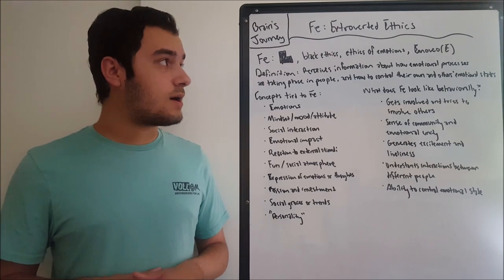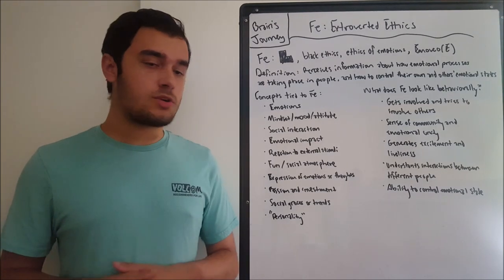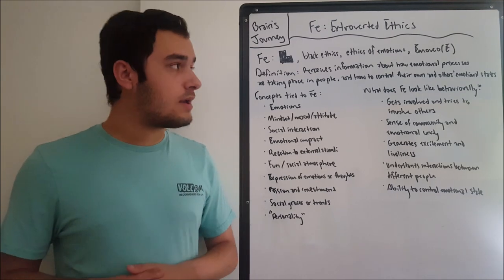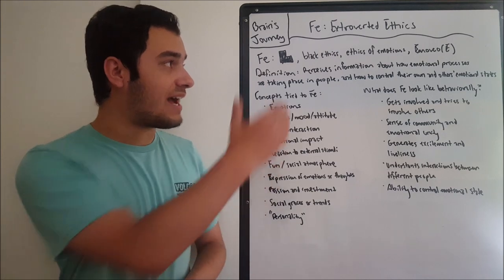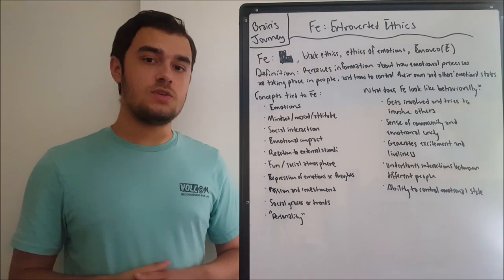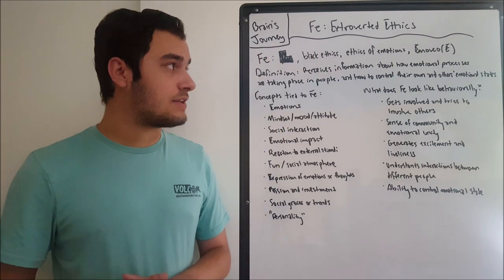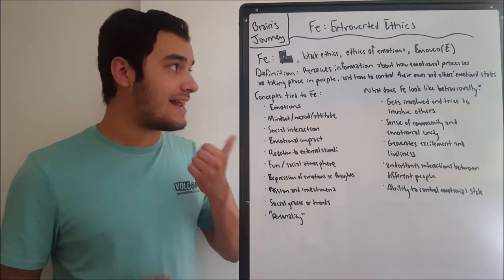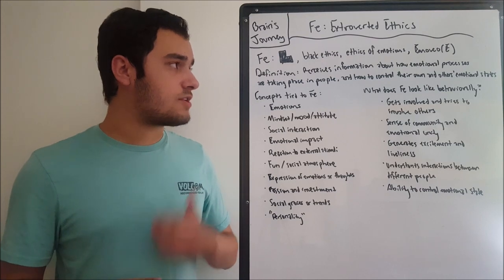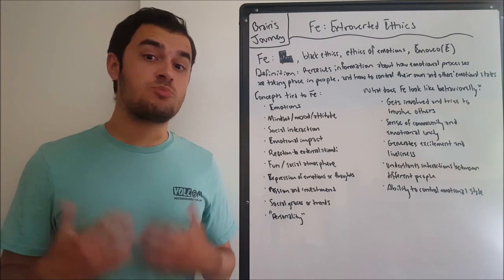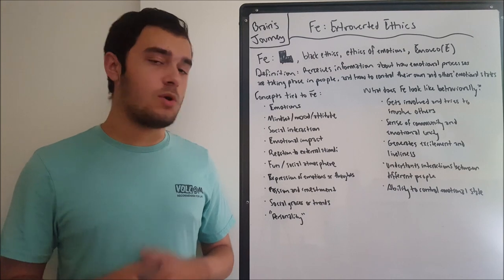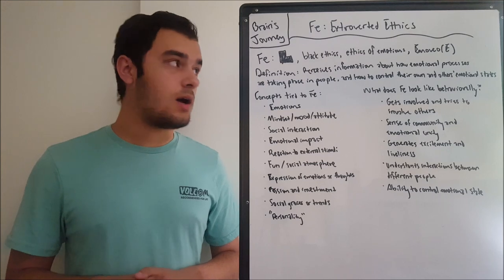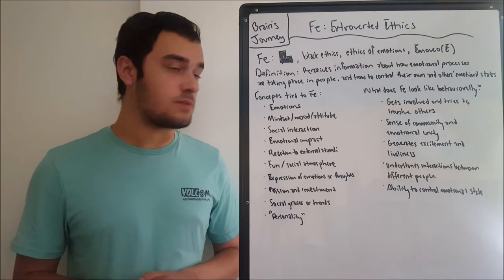Today we're going to talk about FE. Some alternative names: we have this black L-shape, which correspondingly translates to black ethics. And then you'll see with introverted ethics that this is a white, hollowed-out version of the L, also called white ethics. This one's also called ethics of emotions, because it's very expressive and emotive-based. We also have the Latin name, imovio, which you will see abbreviated to E in certain circumstances.